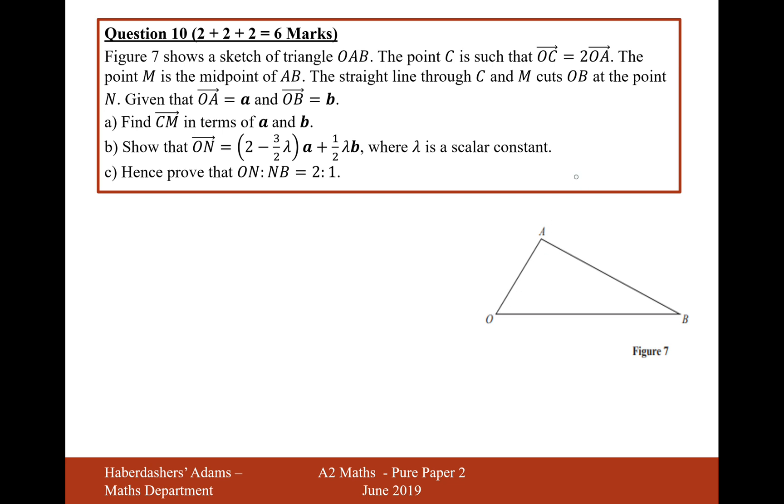So if we double OA we get to C. So C must therefore be a point roughly up here. And that distance A here is going to be the same as this distance A here.